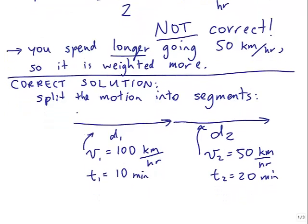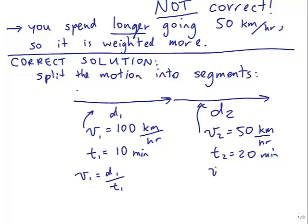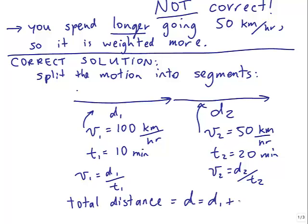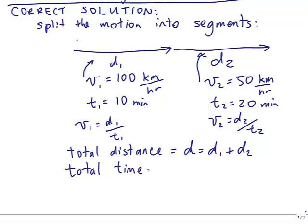So we have V1 is D1 over T1, V2 is D2 over T2, and the total distance is the sum of D1 plus D2. The total time is T1 plus T2.